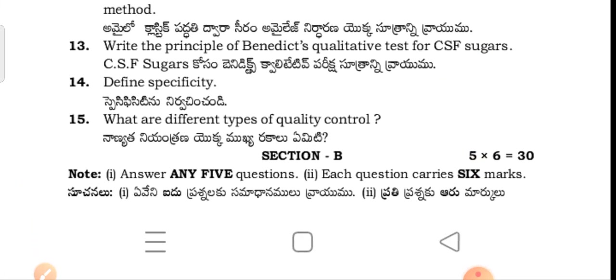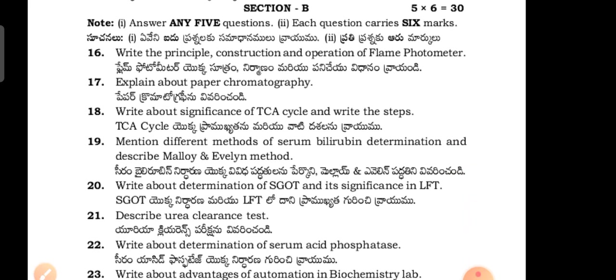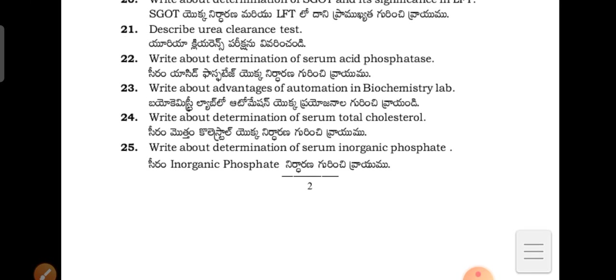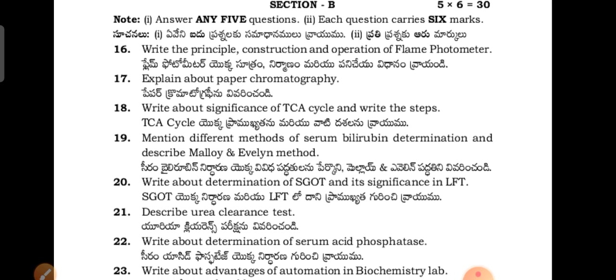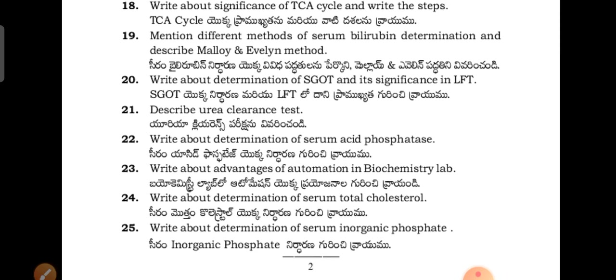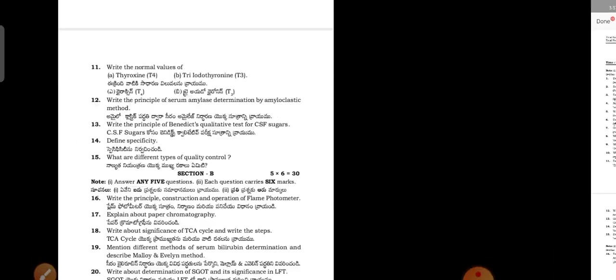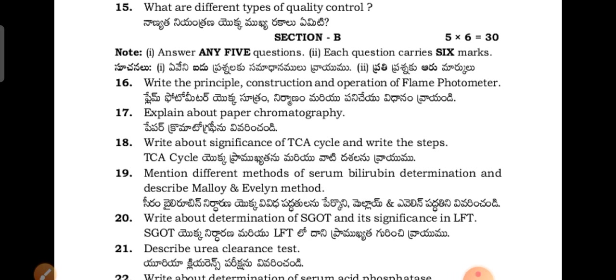Next, coming to Section B. In Section B, they have given 10 questions. Actually in Section B they will give 8 questions and you have to attempt any 6 questions. But here they have given 10 questions, and out of 10 you have to attempt any 5.